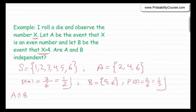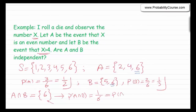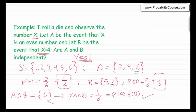Now, what is A intersection B? Looking at the sets, the only common element is 6, so A and B is just the event that the outcome is 6. The probability of A and B equals 1/6. We can check: is this equal to probability of A times probability of B? Probability of A was 1/2 and probability of B was 1/3, so their product is 1/6. In fact, these two events are independent — even though both are related to the number X, we needed to do the math to find that.